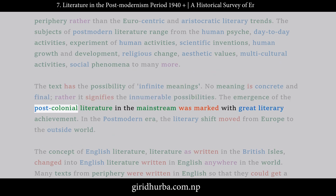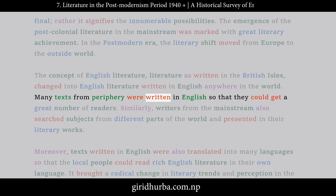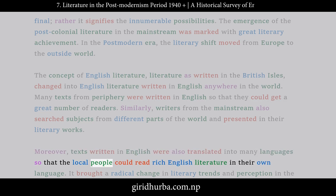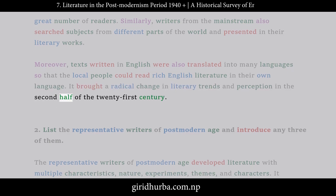The emergence of postcolonial literature in the mainstream was marked with great literary achievement. In the postmodern era, the literary shift moved from Europe to the outside world. The concept of English literature — literature as written in the British Isles — changed into English literature written in English anywhere in the world. Many texts from the periphery were written in English to reach a great number of readers, and texts written in English were also translated into many languages. It brought a radical change in literary trends in the second half of the 20th century.